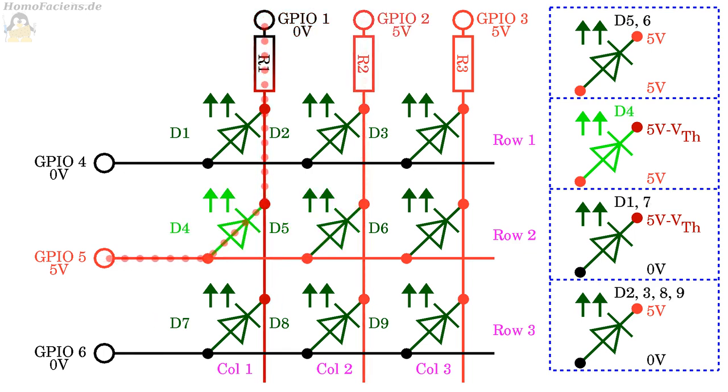Furthermore, the current now flows from the GPIOs that control the rows into the GPIOs of the columns. The rows form current sources, the columns the current sinks, considering conventional current, thus the flow of positively charged particles.